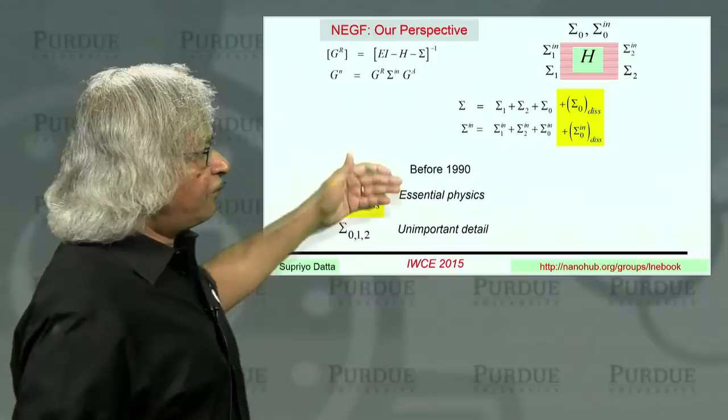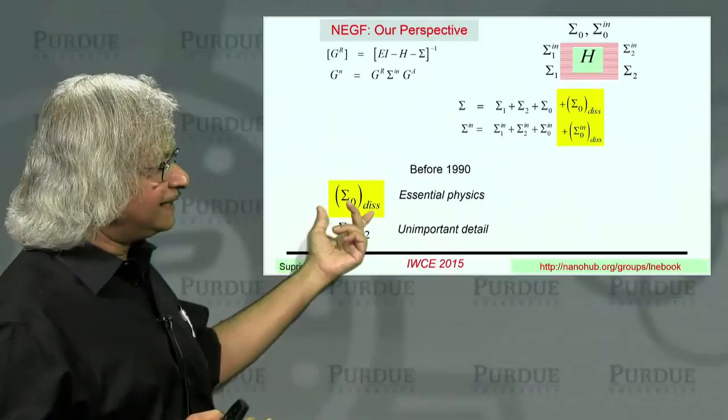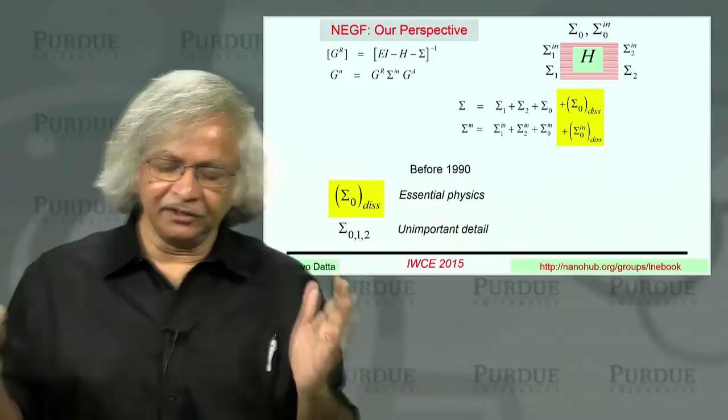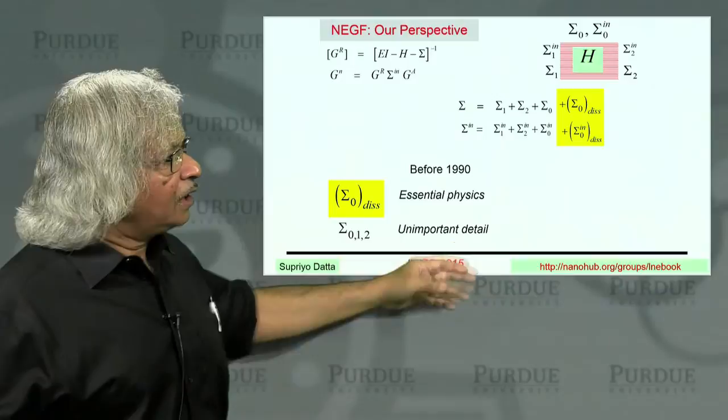And before 1990, before the advent of mesoscopic physics, of course, the general view was that the essential physics of resistance or current flow is actually contained right here in these dissipative processes. The interaction, many-body interactions with the surroundings. And everything else, like the contacts or elastic interactions, those are relatively unimportant details.